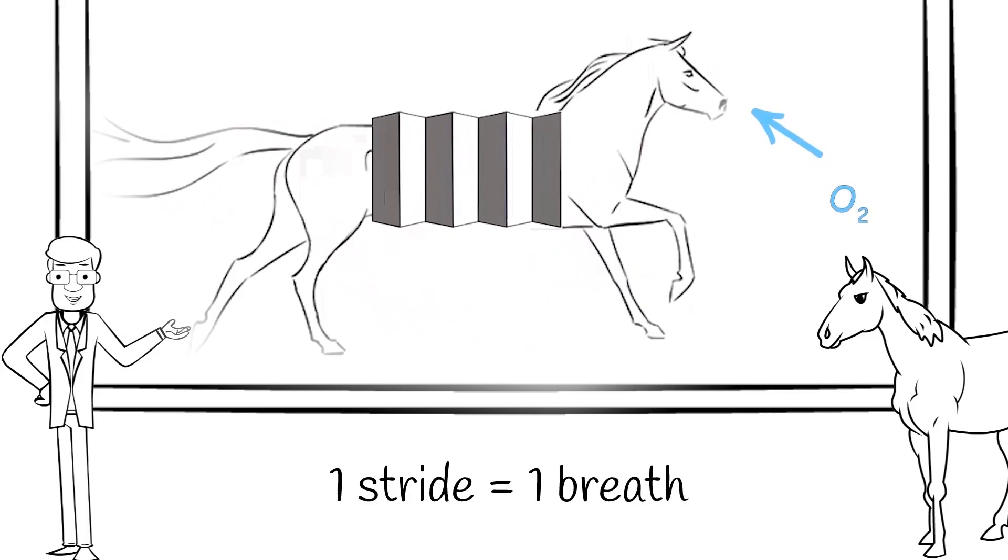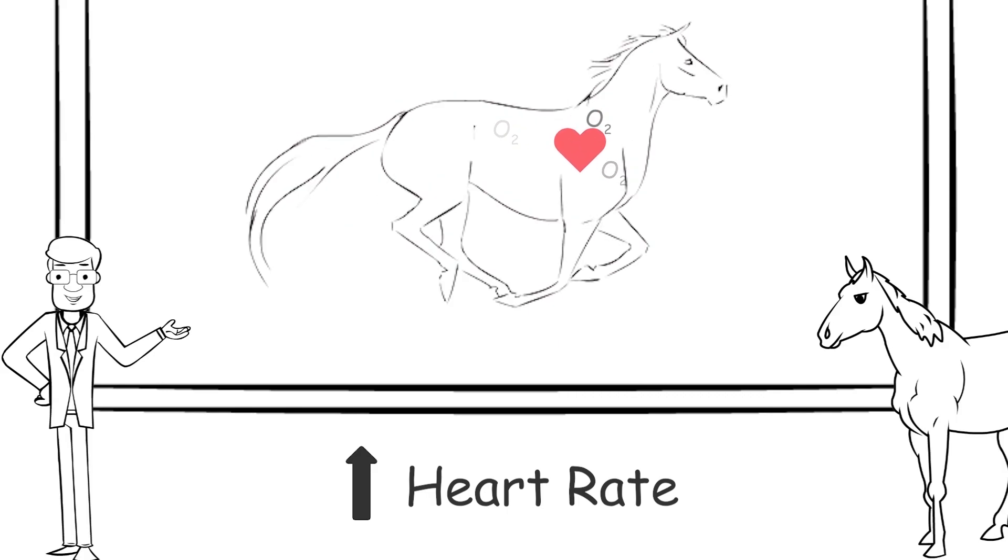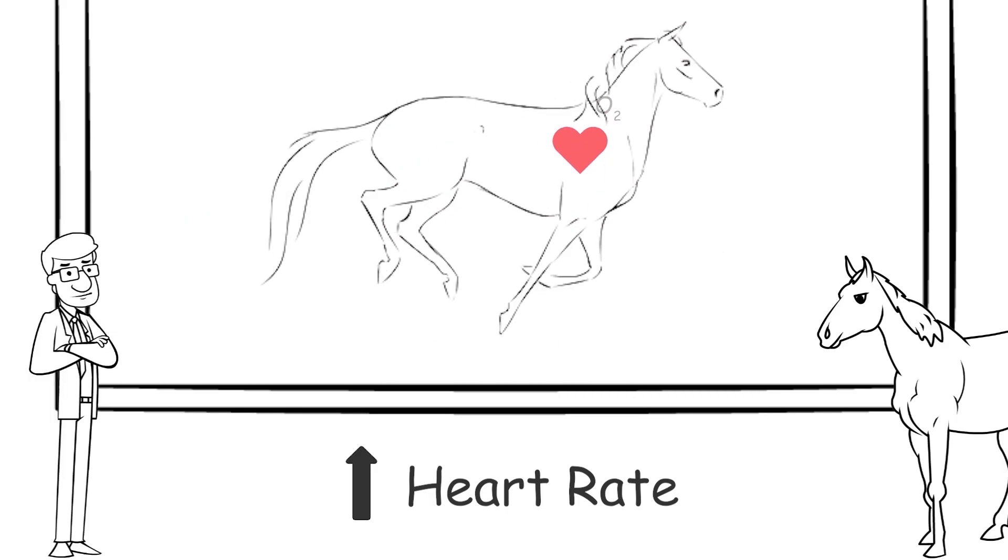At the same time, the horse's heart rate and blood pressure increase to pump more blood to deliver more oxygen to the working muscles.